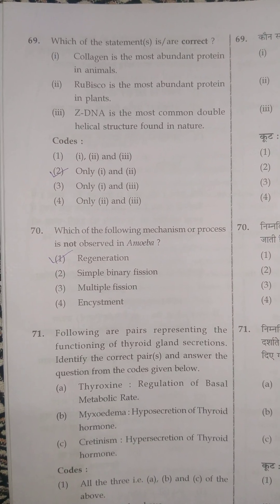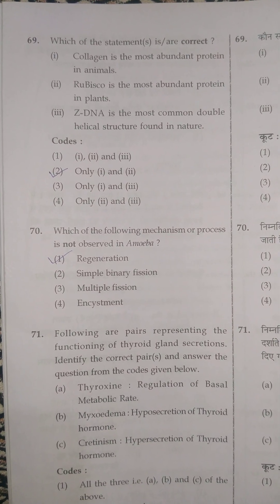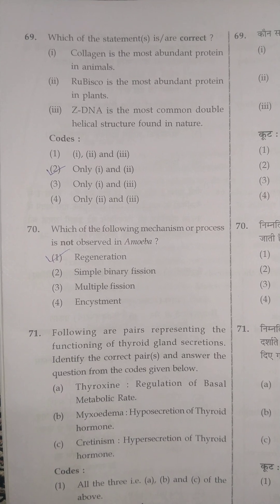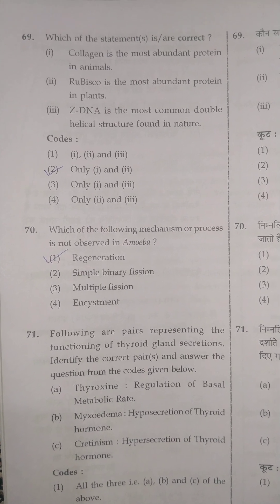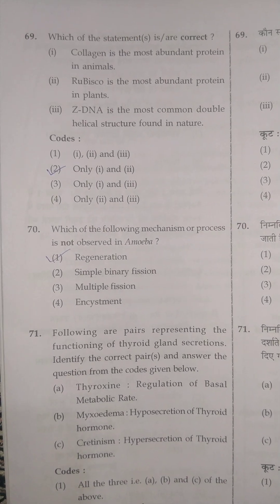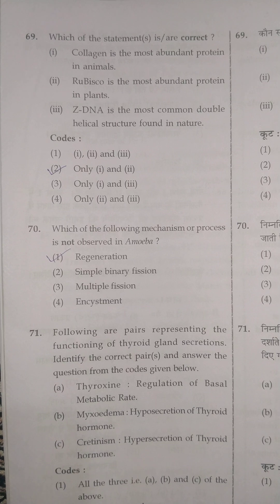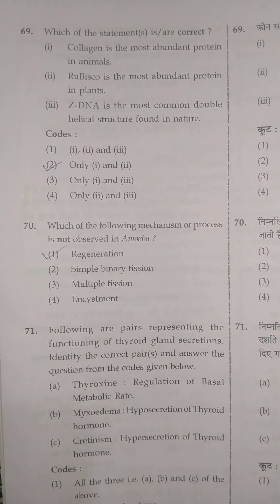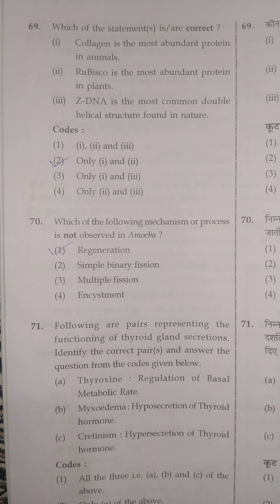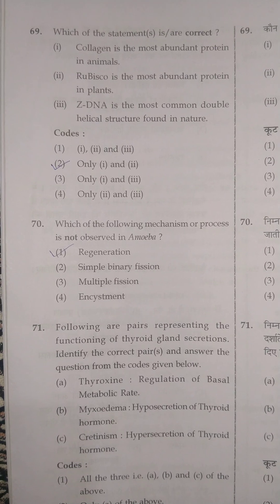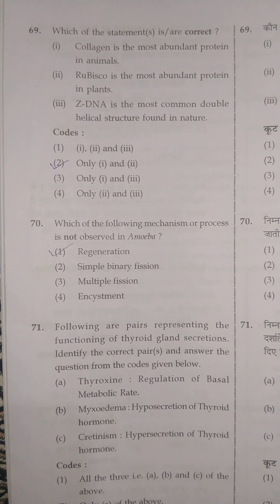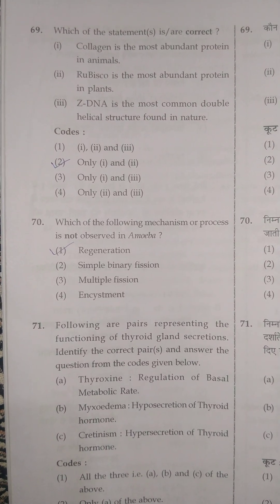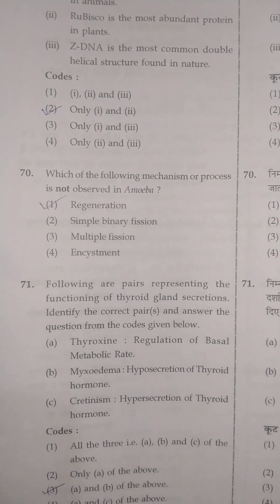Statement 1: collagen is the most abundant protein in animals. Statement 2: RuBisCO is the most abundant protein in plants. Statement 3 was: Z-DNA is the most common double helical structure found in nature — which is wrong, because B-DNA is the most common double helical structure found in nature.